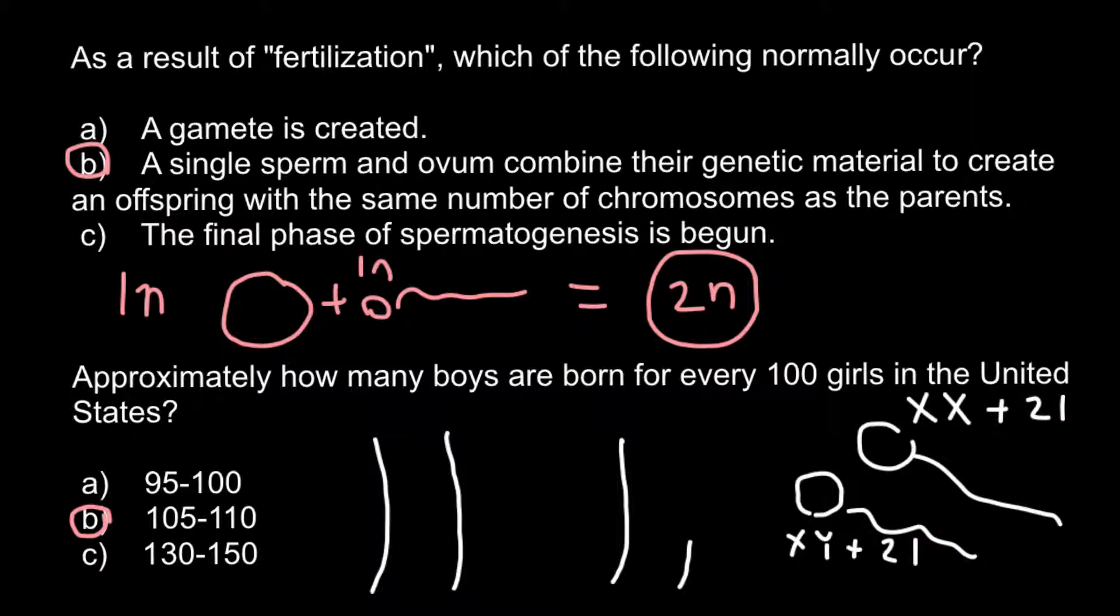This makes XY sperm more motile because they're a little bit smaller and lighter than XX sperm. Sperm that are slightly smaller and lighter move a little bit faster and can reach the egg a little bit faster and more frequently. Not to a large extent, but to a small extent, XY sperm reach the egg faster than XX sperm.